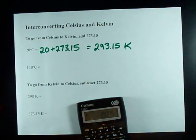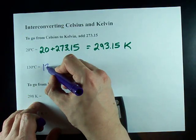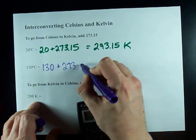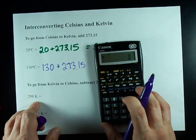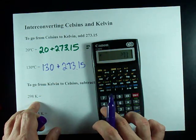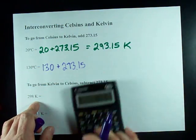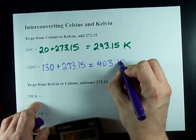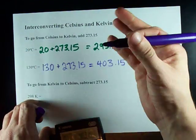I'll do one more for you. 130 degrees Celsius plus 273.15. Let's see if I can do this one properly. 130 plus 273.15 gives me 403.15, approximately 403 Kelvin.